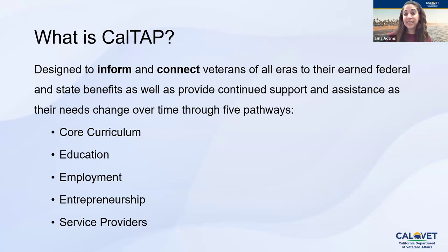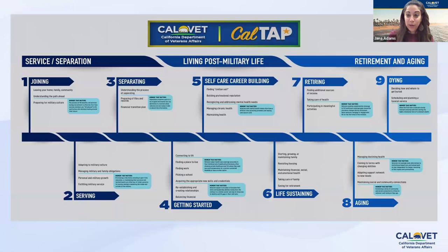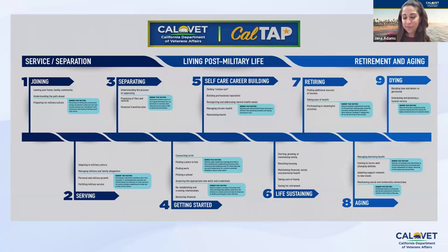We do all this because from when you join the military all the way to the end of your life, you'll go through many stages and need different benefits and resources. This visual shows what we call our life cycle map, covering all the stages from joining through your last days — all the different benefits, resources, and stages you'll encounter.